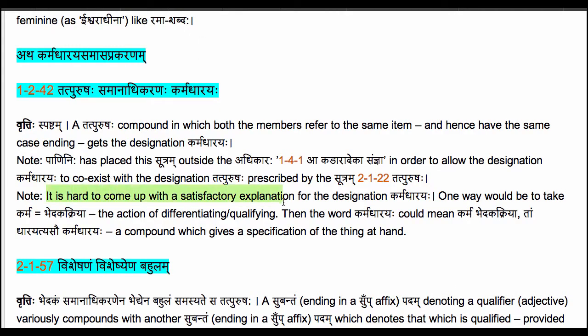The second note says it is hard to come up with a satisfactory explanation for the designation karmadhāraya. One way is to take karma as viśeṣaka-kriyā, the action of differentiating or qualifying. Then karmadhāraya could mean: tam viśeṣaka-kriyāṃ dhārayati asau karmadhārayaḥ — a compound which gives a specification of the thing at hand, which differentiates, qualifies, or distinguishes a particular entity. This is one way of making sense of the term, though it is not very intuitive. It is not exactly clear why these compounds are called karmadhāraya samāsaḥ, and there could be something more to this designation from before Pāṇini's time, though what exactly that is is not known today.